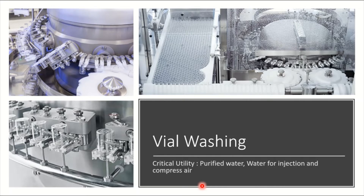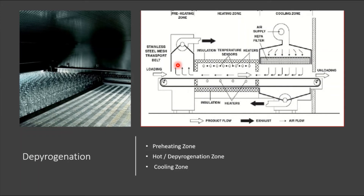Vial washing is an important activity. The vials are first inspected visually under illumination for any breakage or critical defects, then segregated, and placed into the washing machine for subsequent washing. Once washed, the vials move toward the depyrogenation tunnel, which is used to depyrogenate the glass containers.